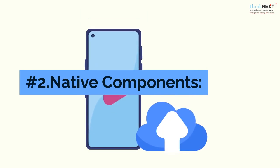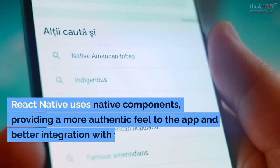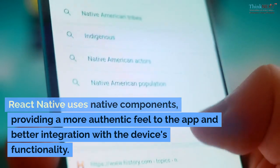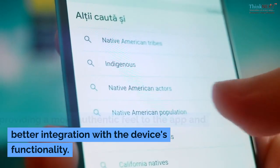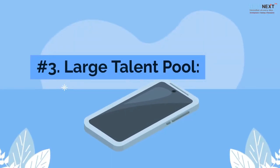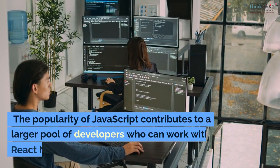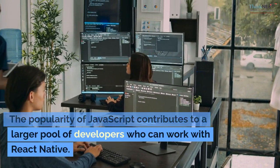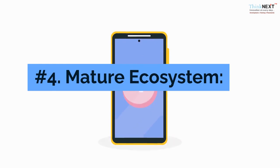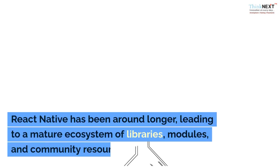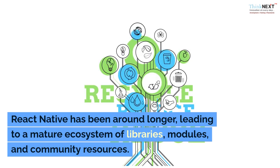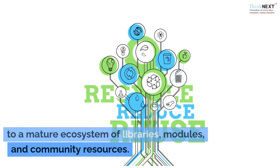Number two, native components: React Native uses native components, providing a more authentic feel to the app and better integration with the device's functionality. Number three, large talent pool: the popularity of JavaScript contributes to a larger pool of developers who can work with React Native. Number four, mature ecosystem: React Native has been around longer, leading to a mature ecosystem of libraries, modules, and community resources.